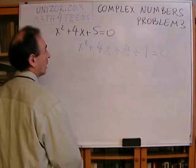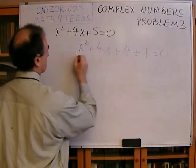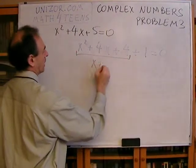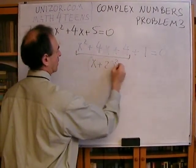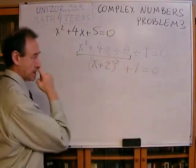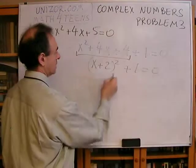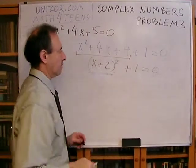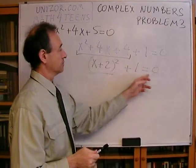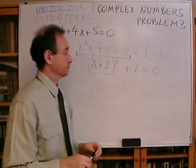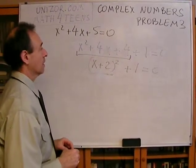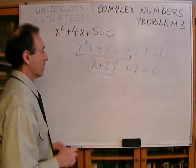And this represents the full square, x plus 2 square plus 1 equal to 0. So obviously, this is a positive number, and it cannot be equal to 0 if you add 1. So we do need complex numbers to solve certain quadratic equations.